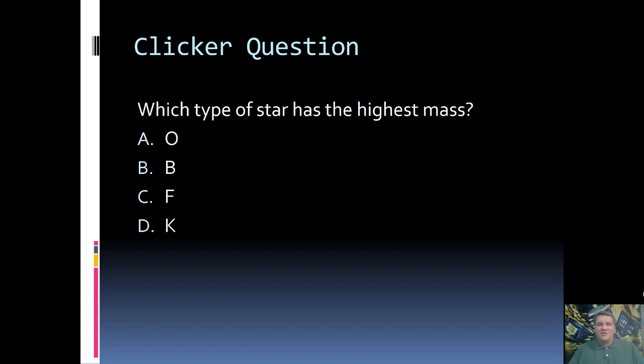All right, here is our third lecture quiz question. Which type of star has the highest mass? A: O, B: B, C: F, or D: K? Go ahead and think about it, and we'll discuss in just a bit. So which spectral type has the highest mass? It is A. O type stars are going to have the highest mass. M type have the lowest. So as we go through OBAFGKM, O's have the highest mass, M have the lowest mass on the main sequence. Now once we get off the main sequence, other stuff takes over. But this is true on the main sequence.